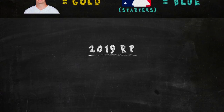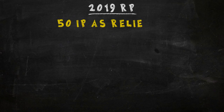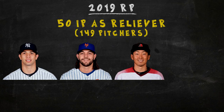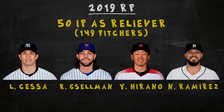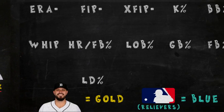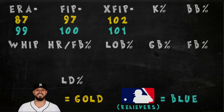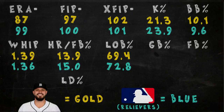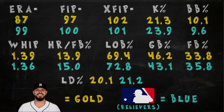Next up, we have most average relief pitcher of 2019. I looked at pitchers with at least 50 innings pitched in relief, which gave us 149 to look at. Our shortlist consisted of Luis Cessa, Robert Gsellman, Yoshihisa Hirano, and Nick Ramirez. It was a tough call between Cessa and Ramirez, but in the end Ramirez was the pick. ERA, FIP, and xFIP tend to fluctuate more for relievers, but Ramirez is really close to average in the latter two. His strikeout rate was a bit below average, but walk rate and WHIP were pretty close, as were his left on base and homer per fly ball rates and the batted ball rates. Compared to starting pitchers, finding an average relief pitcher was a bit more difficult, but we'll touch on that more in a bit.